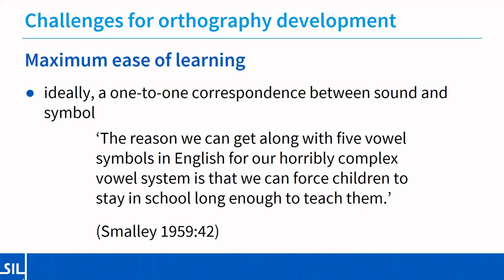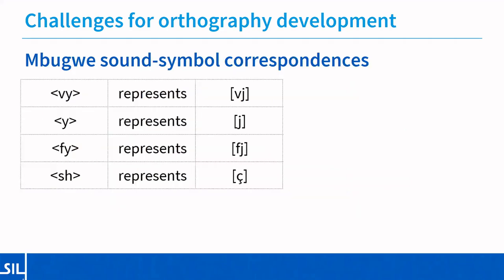Another principle to consider is maximum ease of learning, specifically the consistency of sound-symbol correspondences — ideally one sound would be represented by only one symbol and one symbol would represent only one sound. English is an excellent example of what not to do. Smalley remarks that the reason we can get along with five vowel symbols in English for a horribly complex vowel system is that we can force children to stay in school long enough to teach them. We don't have that luxury in the Mbukwe context. It would be unfair to expect that new Mbukwe readers will similarly be able to cope with an inconsistent system — instead we will seek to minimize the inconsistencies.